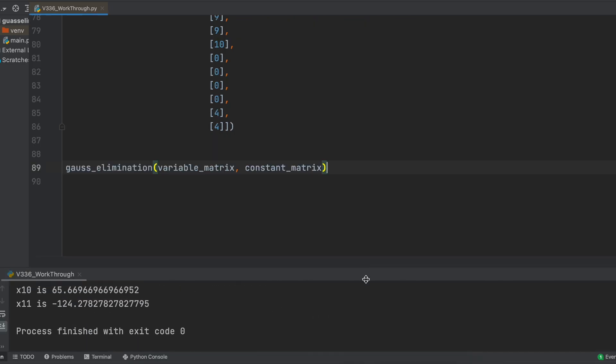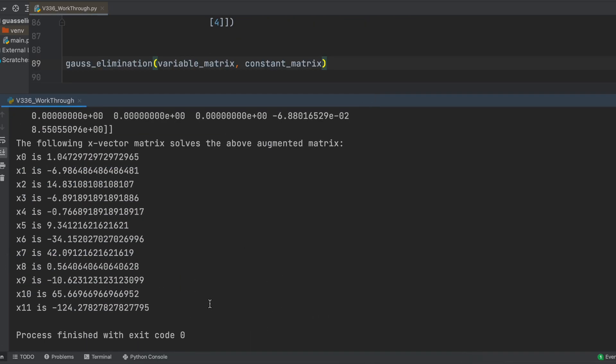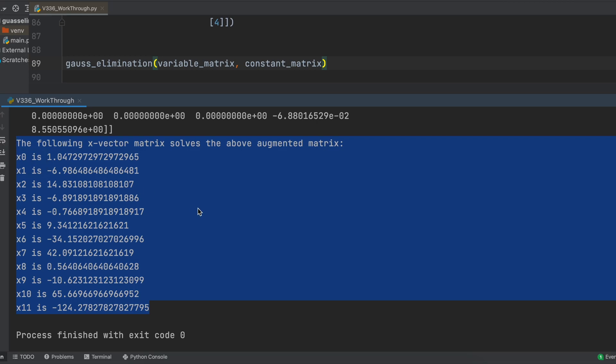As you can see, we have now solved for all of our 12 unknowns. Each of these x values represents a coefficient for our three interpolating polynomials. x0 is a1, x1 is b1, x2 is c1, x3 is d1, and so on.